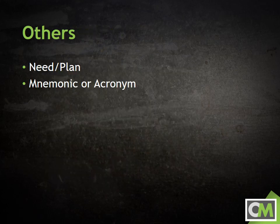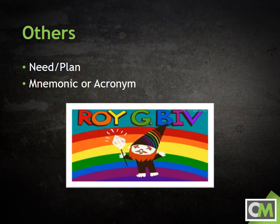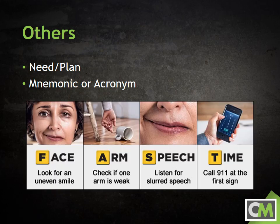Two other commonly used organizational patterns are need-plan and mnemonic or acronym organization. In need-plan, a speaker first establishes the need for a change in action or policy and then lays out their plan for addressing that need. Mnemonic or acronym organization is a method that uses an acrostic to help the audience follow and retain the main points of a speech. One classic example is using ROYGBIV to remember that the colors of the rainbow are red, orange, yellow, green, blue, indigo, and violet. Another illustration would be a speech on stroke symptom awareness using the acronym FAST to help the audience remember the main points of face, arm, speech, and time.